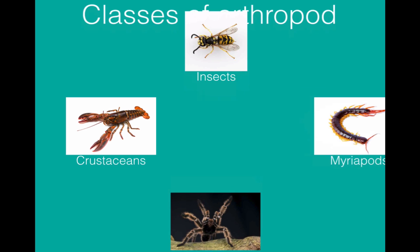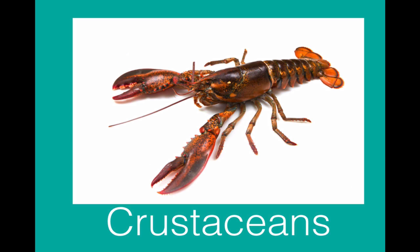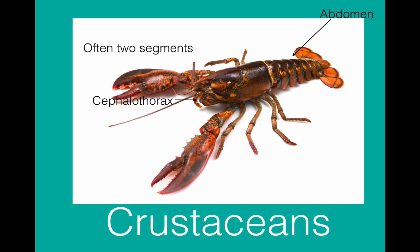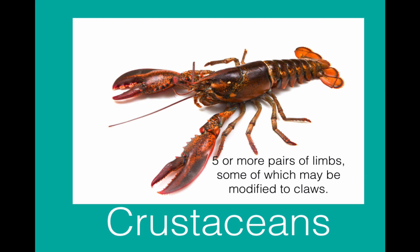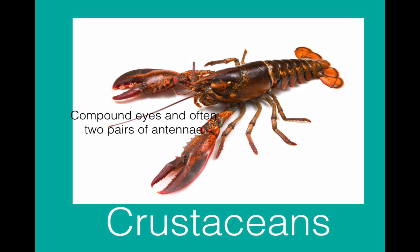The next type are the crustaceans. Crustaceans often contain two segments: a cephalothorax — a head and thorax joined together — and an abdomen. Sometimes in a crab it can be hard to spot the difference between the segments; it's more obvious in a lobster or a prawn. They have five or more pairs of limbs, some of which may be modified into claws. This lobster has ten limbs, two of which are claws. Crustaceans have compound eyes and often have two pairs of antennae, though this is not always obvious in pictures. For exam questions, go with the pictures rather than your base knowledge.